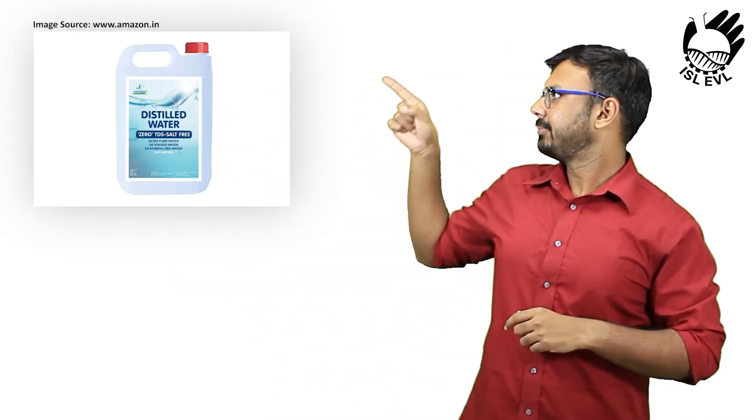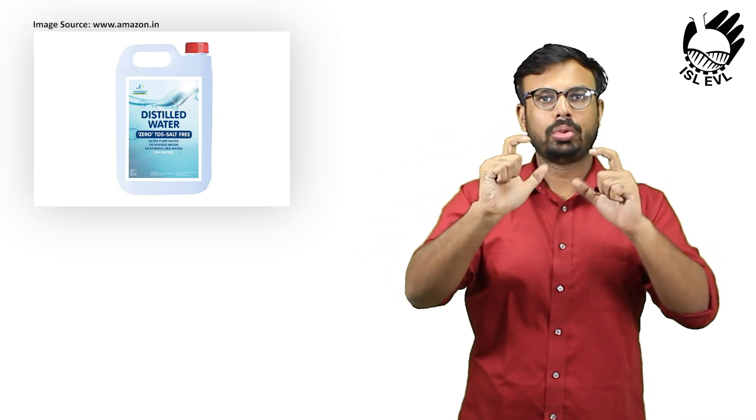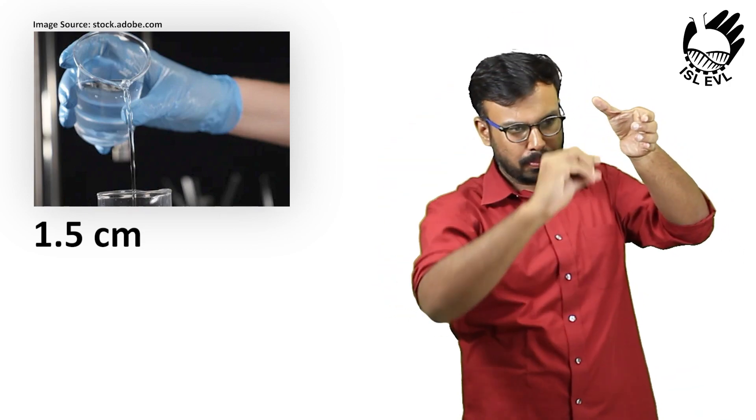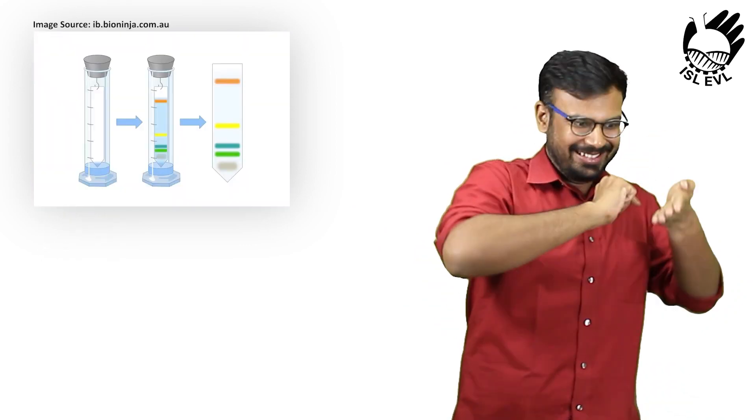Allow the ink to dry thoroughly. Carefully add distilled water to the beaker at a depth of 1.5 cm, the same height as the lower pencil line on the paper.